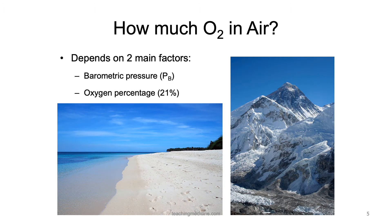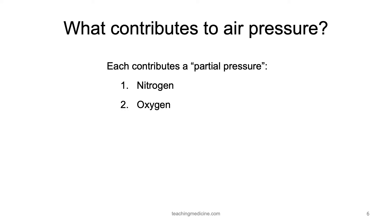One of the most important details we want to know about the air that we breathe in is how much oxygen is in it. The amount of oxygen depends on two main factors: the barometric pressure and the oxygen percentage. To best understand barometric pressure, we also need to know the concept of partial pressure. Partial pressure is the contribution of each component of air to the overall pressure.